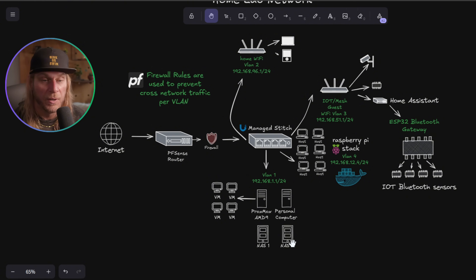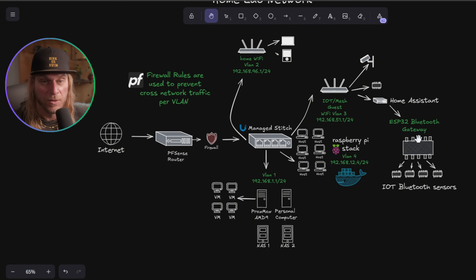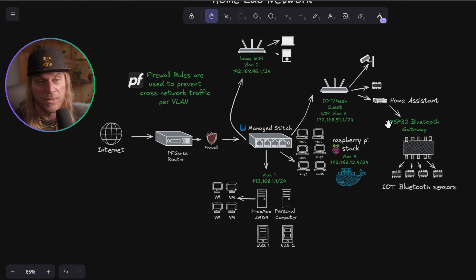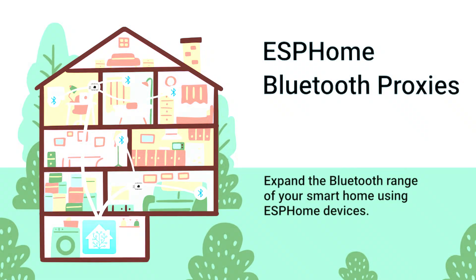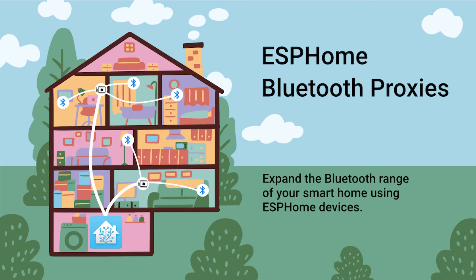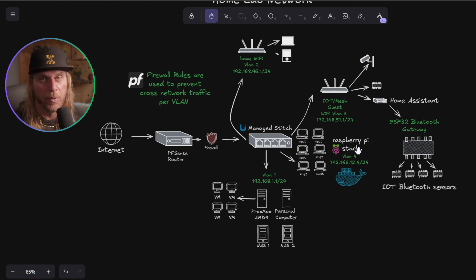Over here is an ESP32 gateway — something I'm currently building out and will probably do a video on. Limiting your physical network footprint is extremely powerful. With that, I'm going to put you on the GoPro — it won't be great camera work — but I want to show you what I have set up.